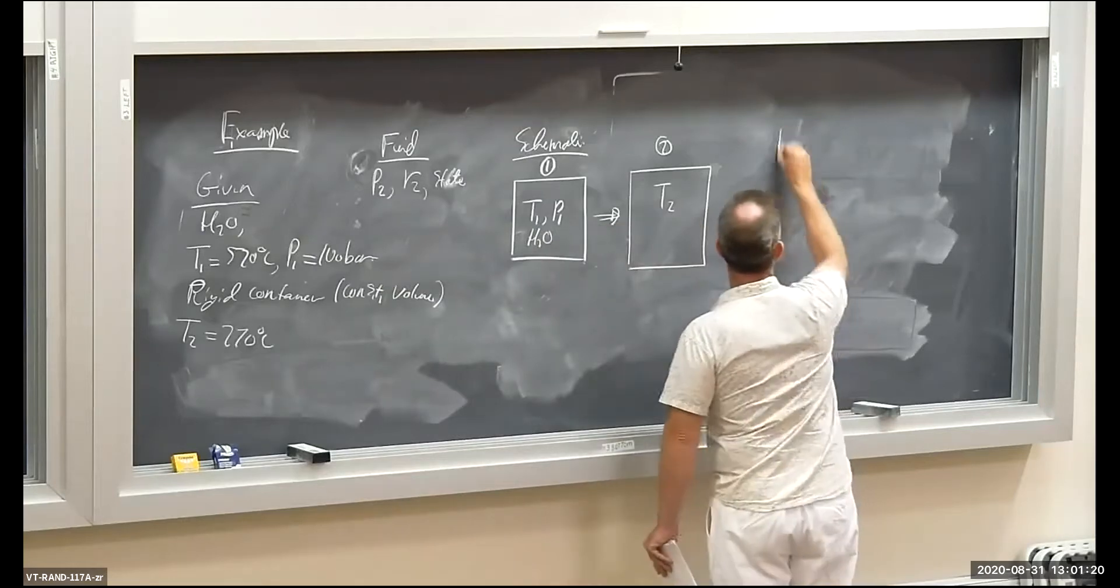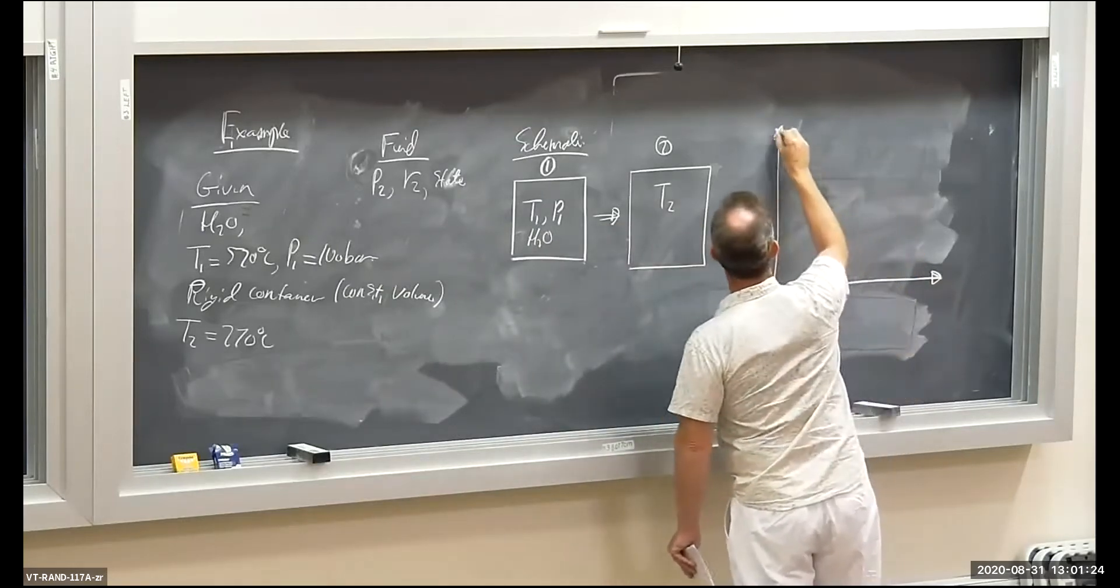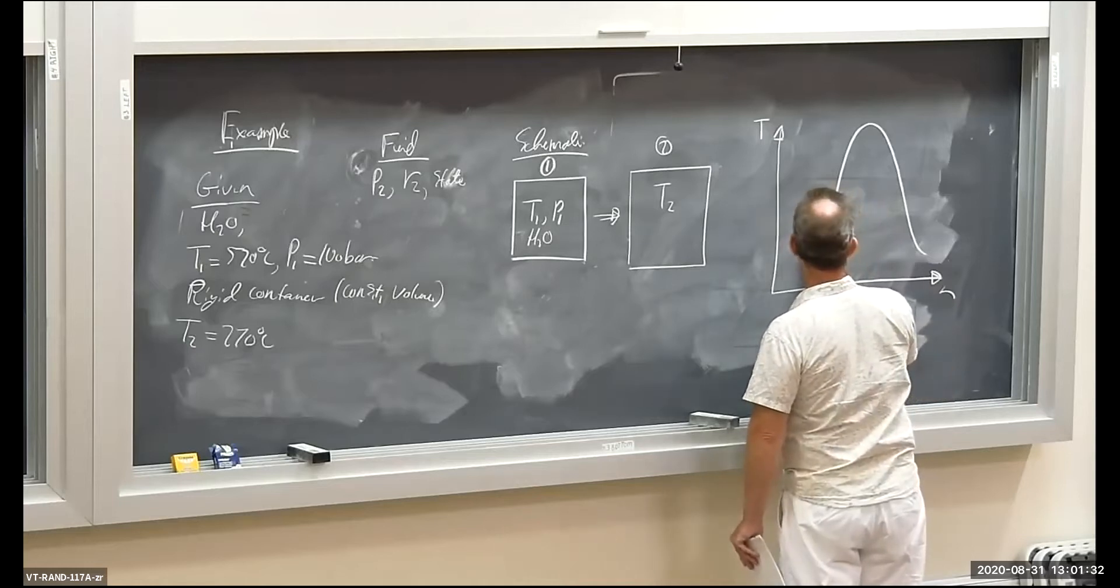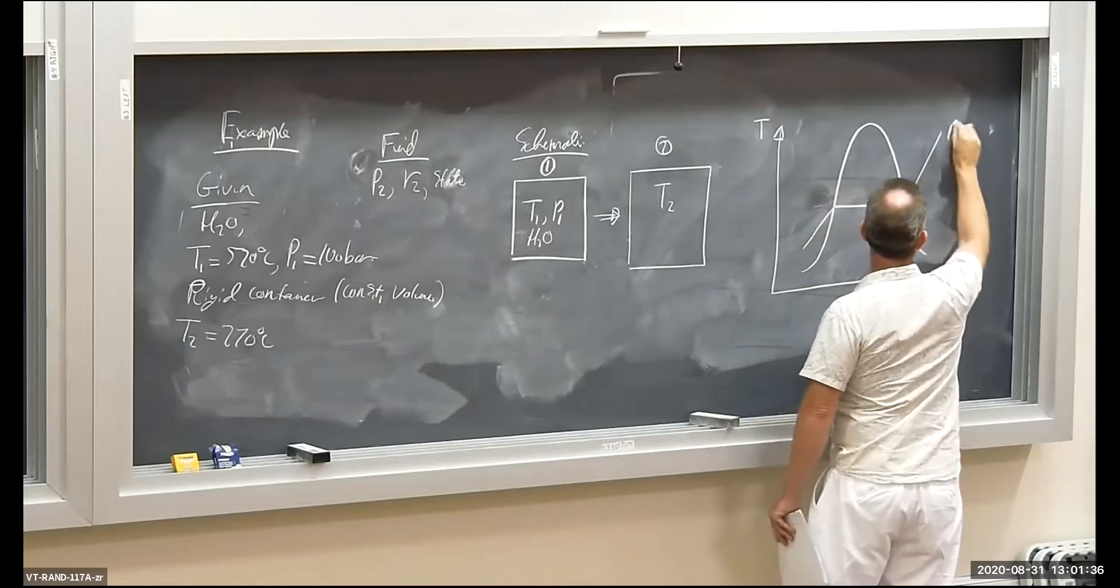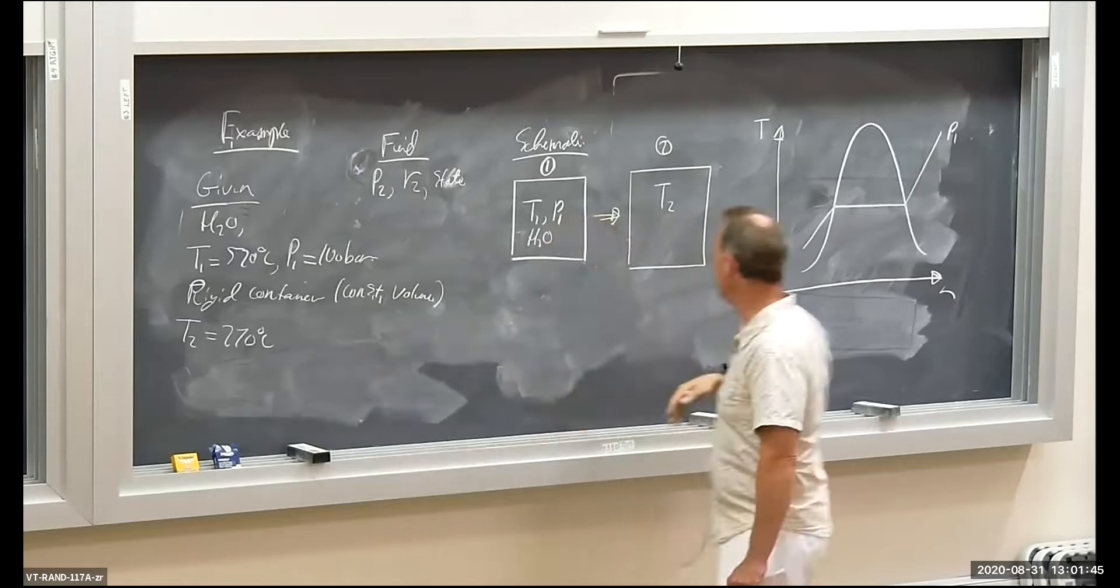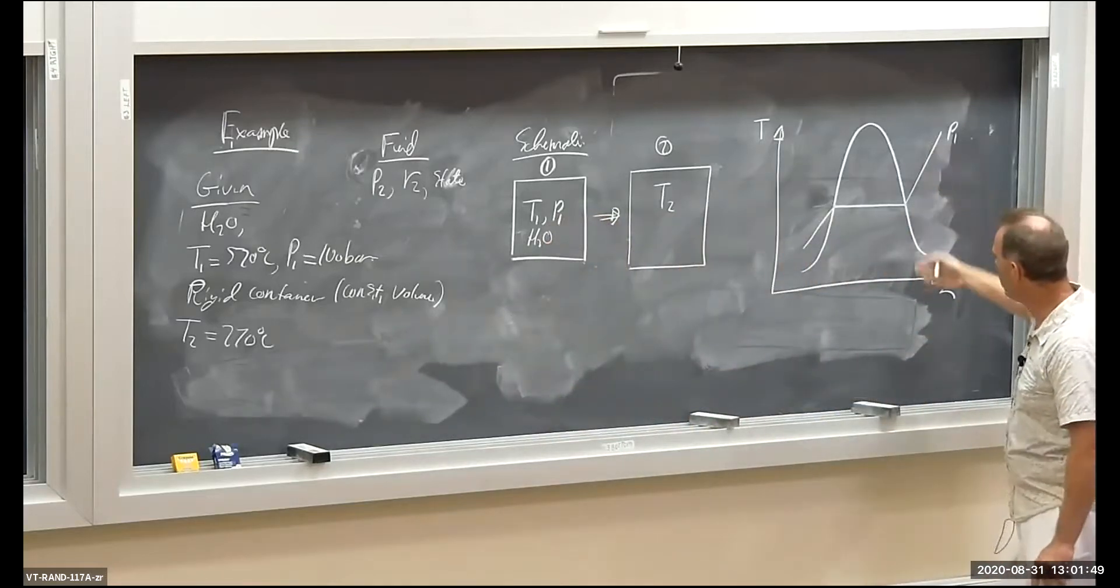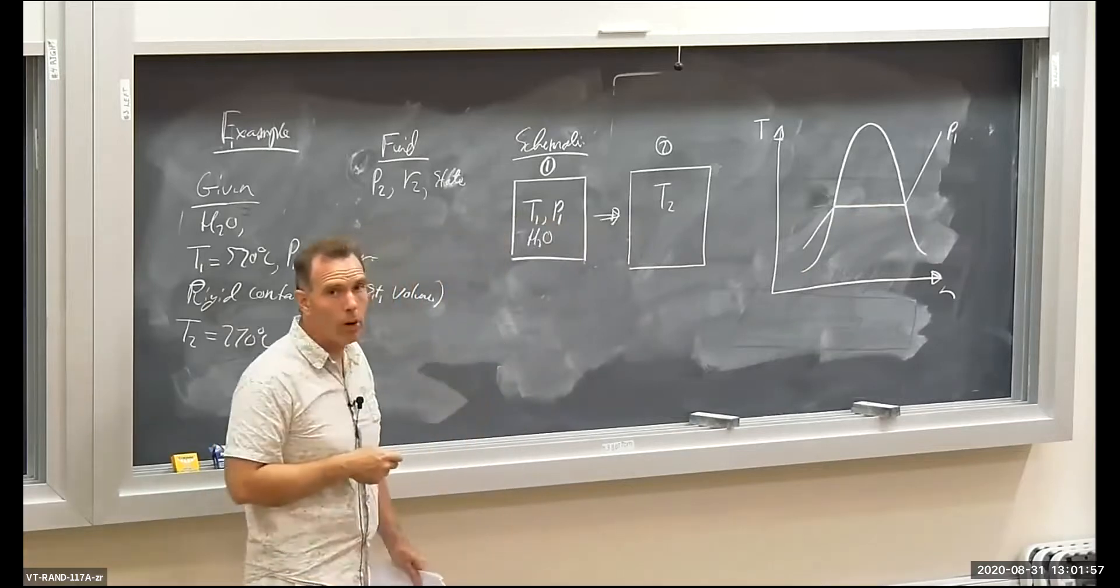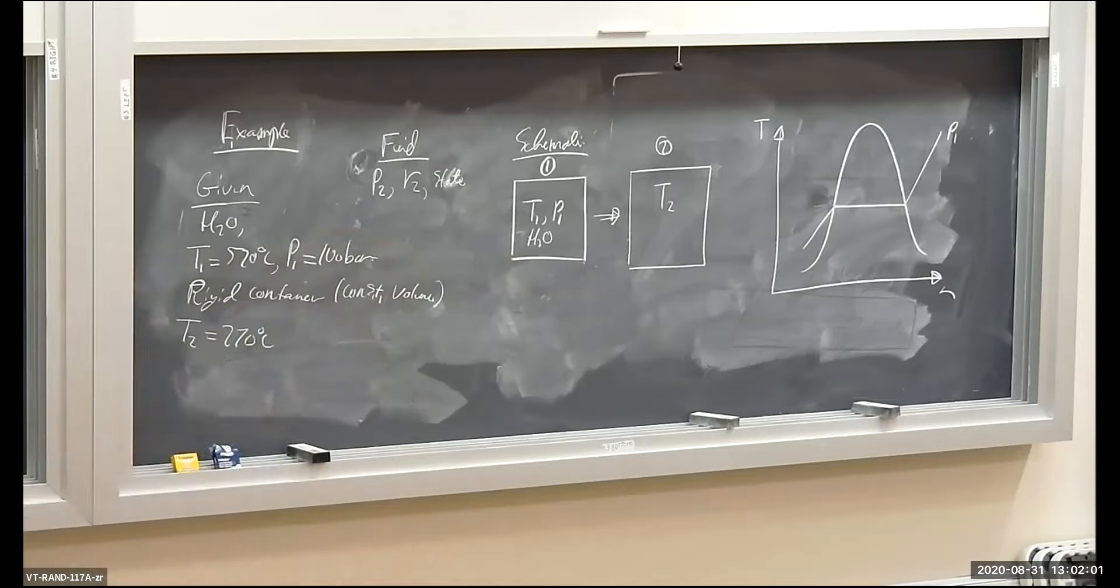Now to whet your appetite here, let's put up the TV diagram. We'll finish this up next time. So I've got my P1 isobar. I don't know where I am on the isobar, but I do know it's a rigid container, constant volume. I do know that I'm going to be moving horizontally up and down the TV diagram. Why horizontally? Because if it's a rigid container, it's an isochoric process. We will finish this up next time, and then we will move on to ideal gas law and some additional stuff from chapter two in the remaining part of the lecture.